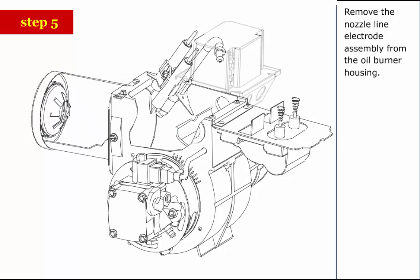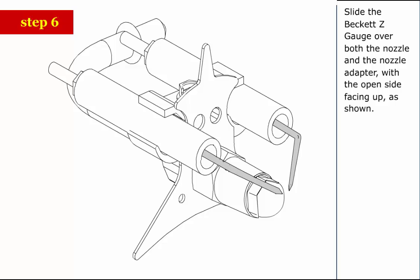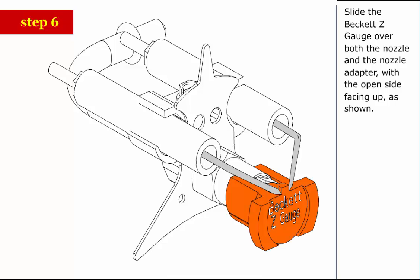Step 5: Remove the nozzle line electrode assembly from the oil burner housing. Step 6: Slide the Beckett Z gauge over both the nozzle and the nozzle adapter with the open side facing up as shown.